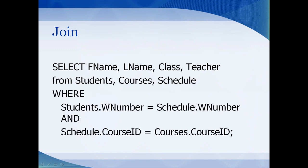The book doesn't go deep into SQL and doesn't cover table joins, but here's a simple join using all three tables in our database. It selects just a few fields from all three tables with a WHERE clause matching the student number to the schedule table and the schedule ID to the course ID — getting data only where there's a relationship. This shows a complete schedule with the first and last names of the students and the teacher they have.